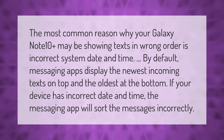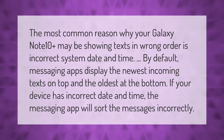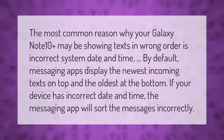The most common reason why your Galaxy Note 10 Plus may be showing texts in wrong order is incorrect system date and time. By default, messaging apps display the newest incoming texts on top and the oldest at the bottom. If your device has incorrect date and time, the messaging app will sort the messages incorrectly.